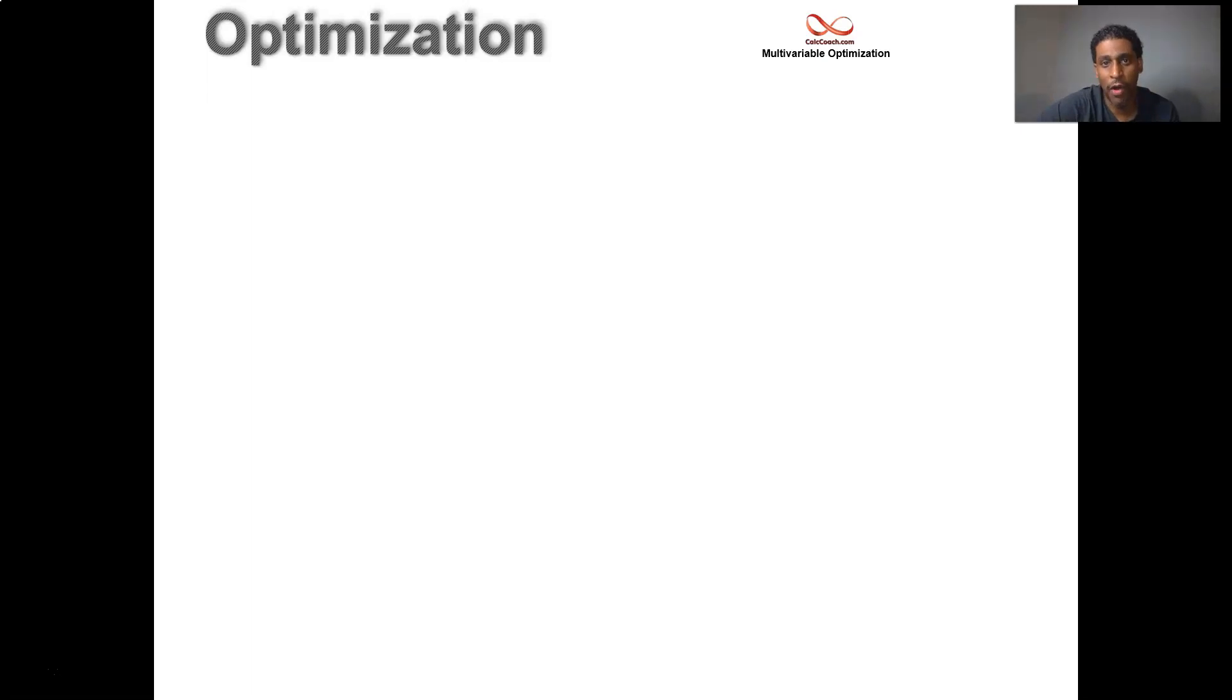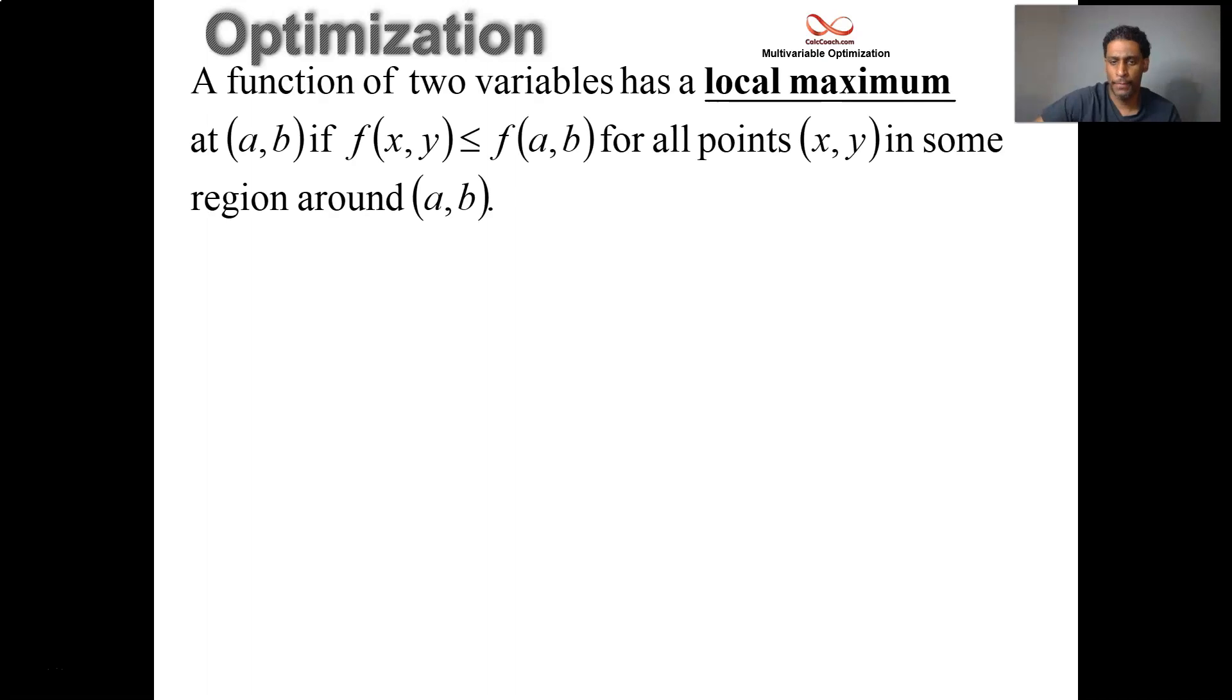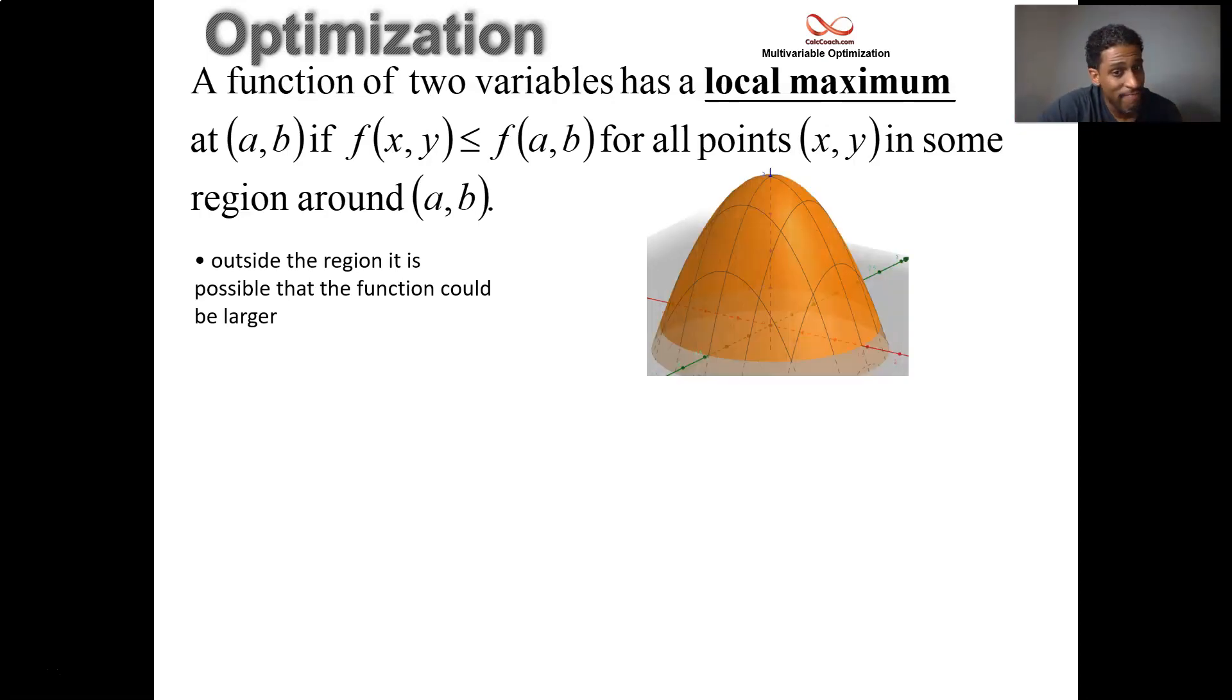A local maximum in a multivariable function is one where the function value f(a,b) is the largest value for all points that are nearby, in some region around that point. Outside the region, maybe it goes up higher, but locally though, what you have is a peak. We're going to find out how to know when this happens and where it happens.